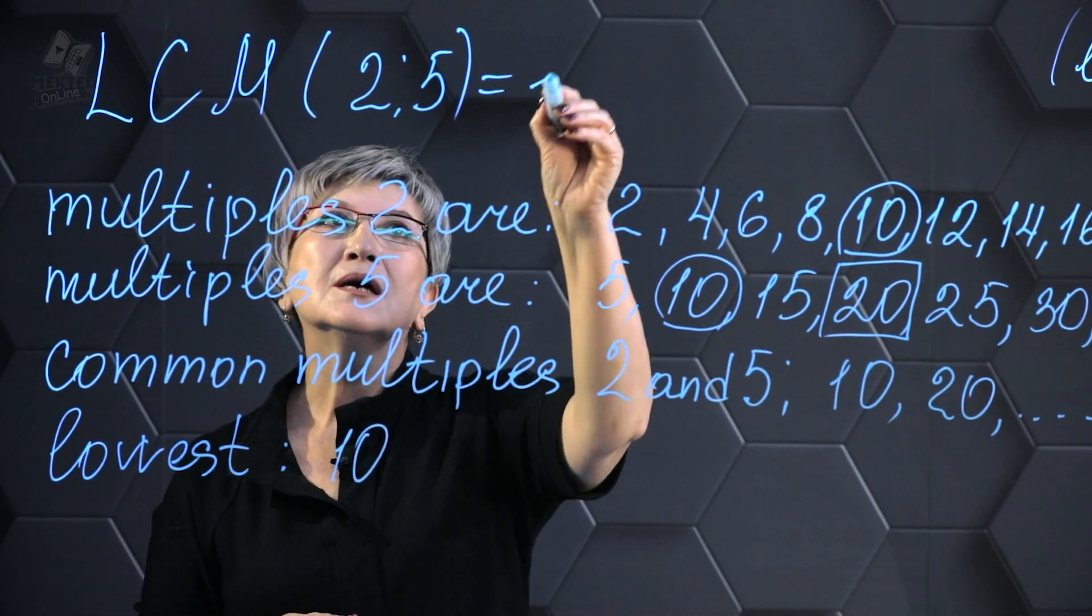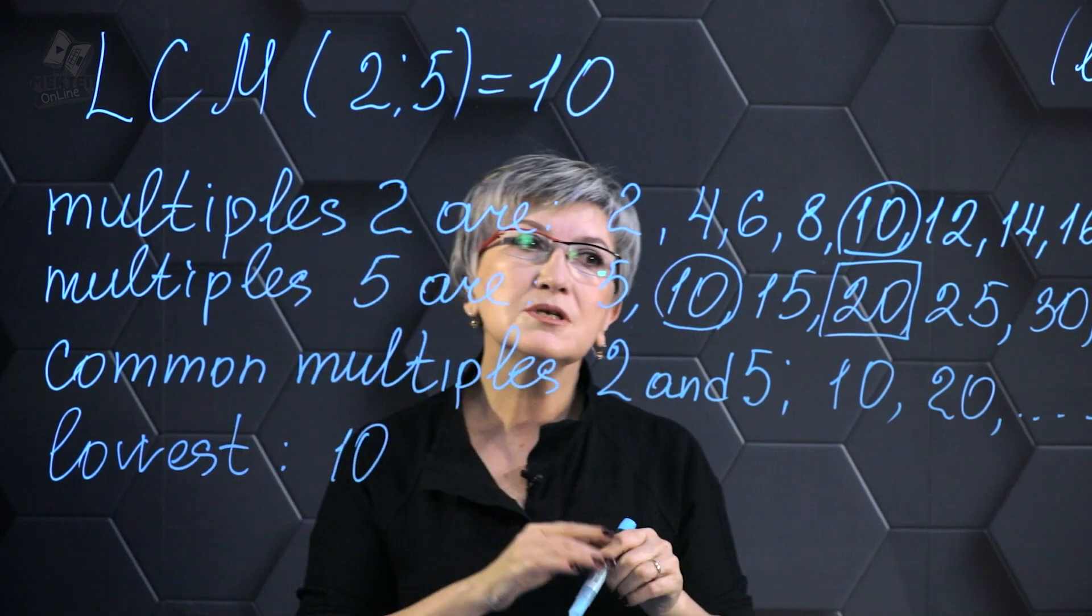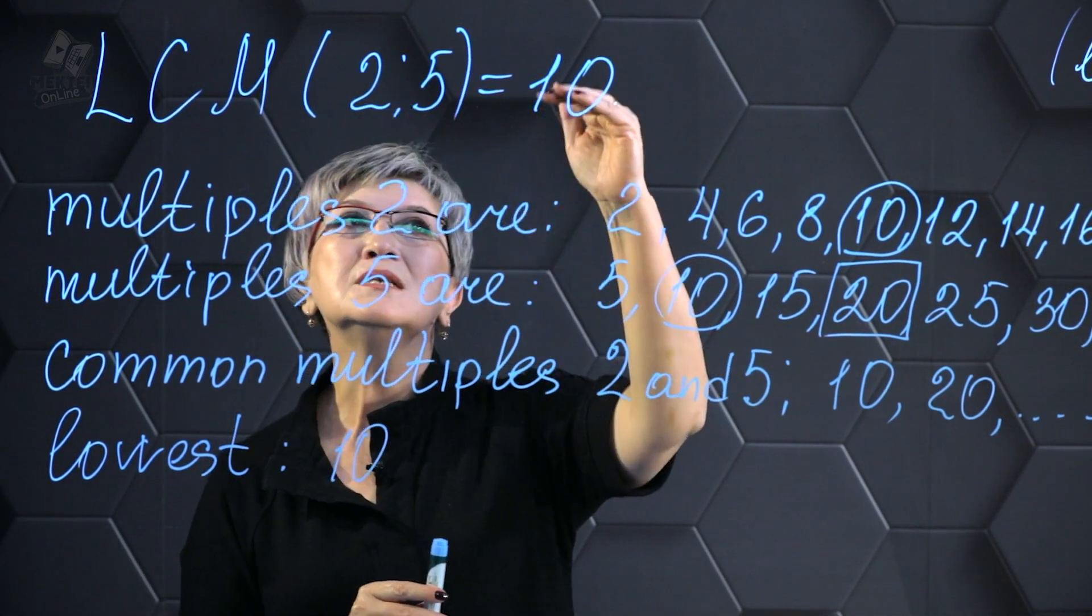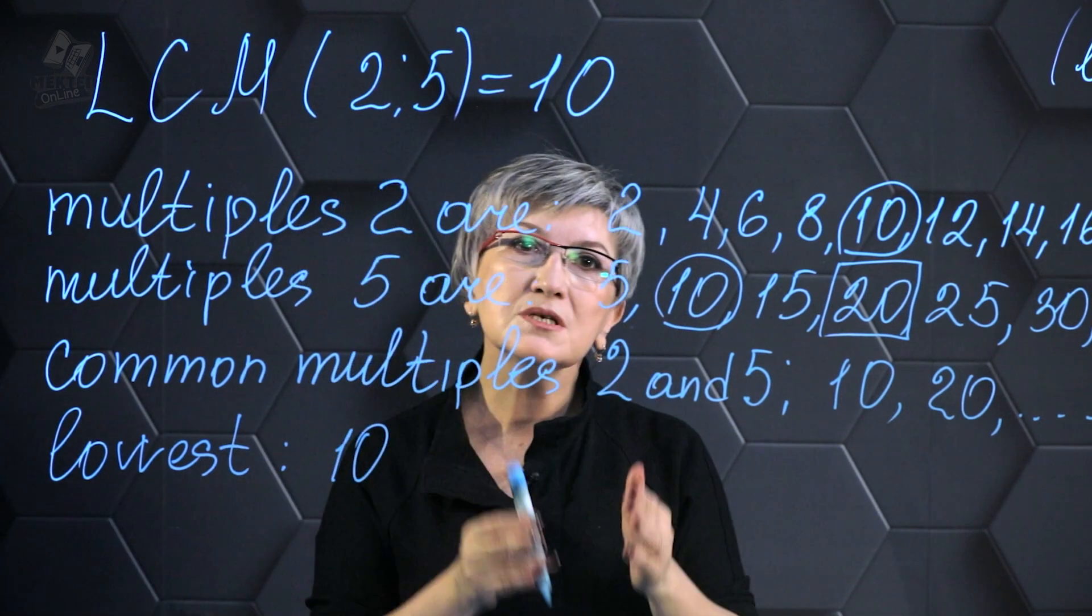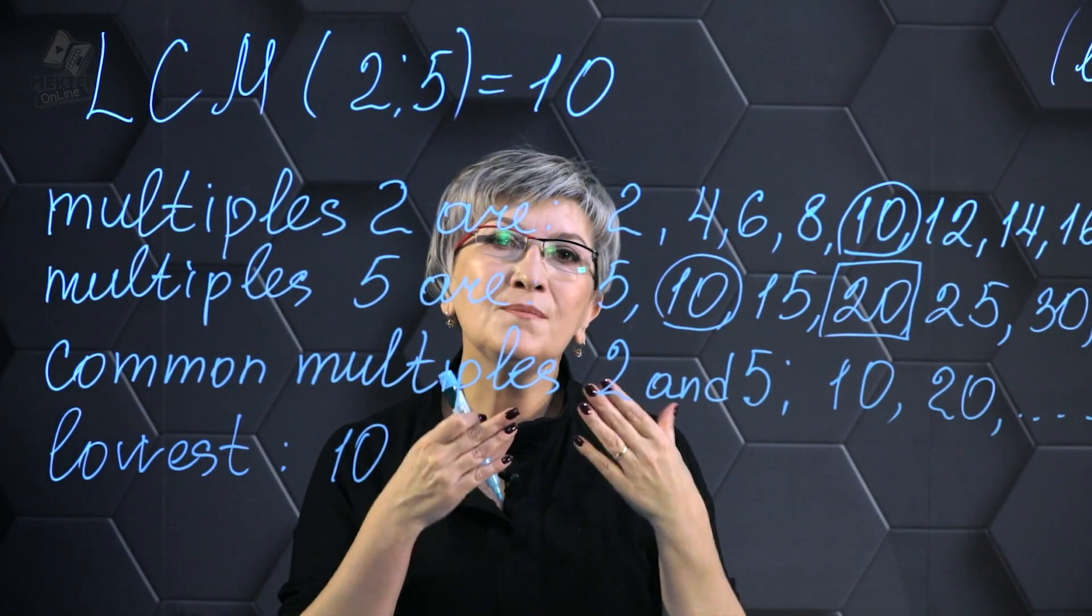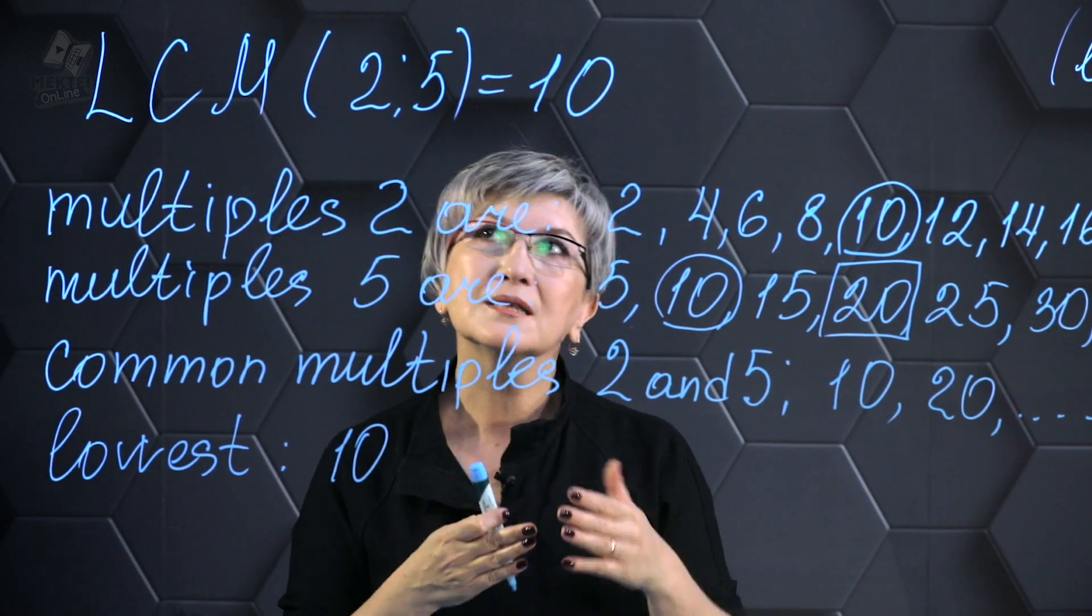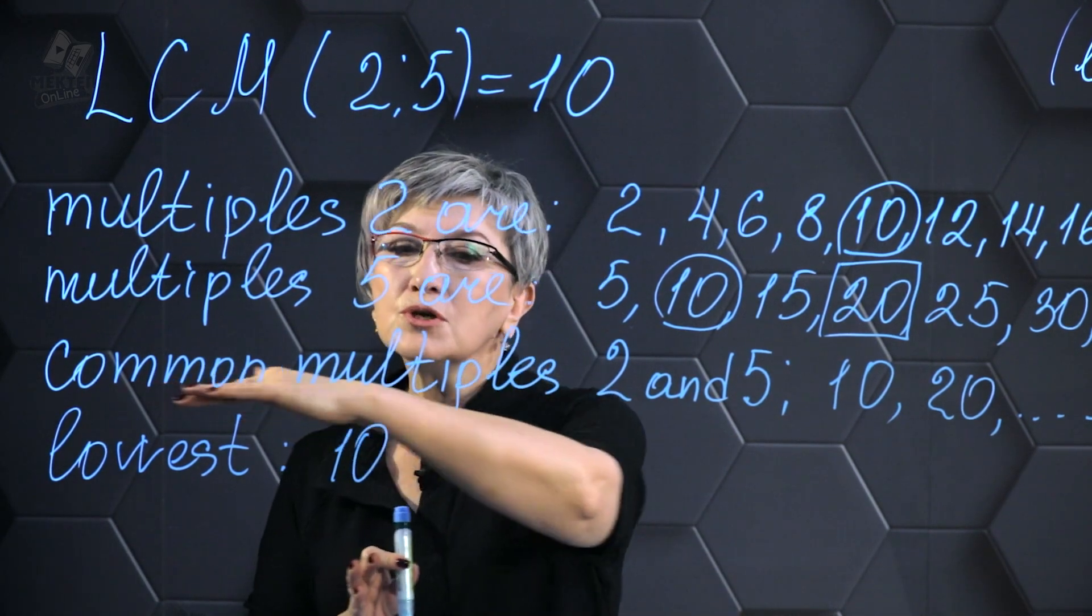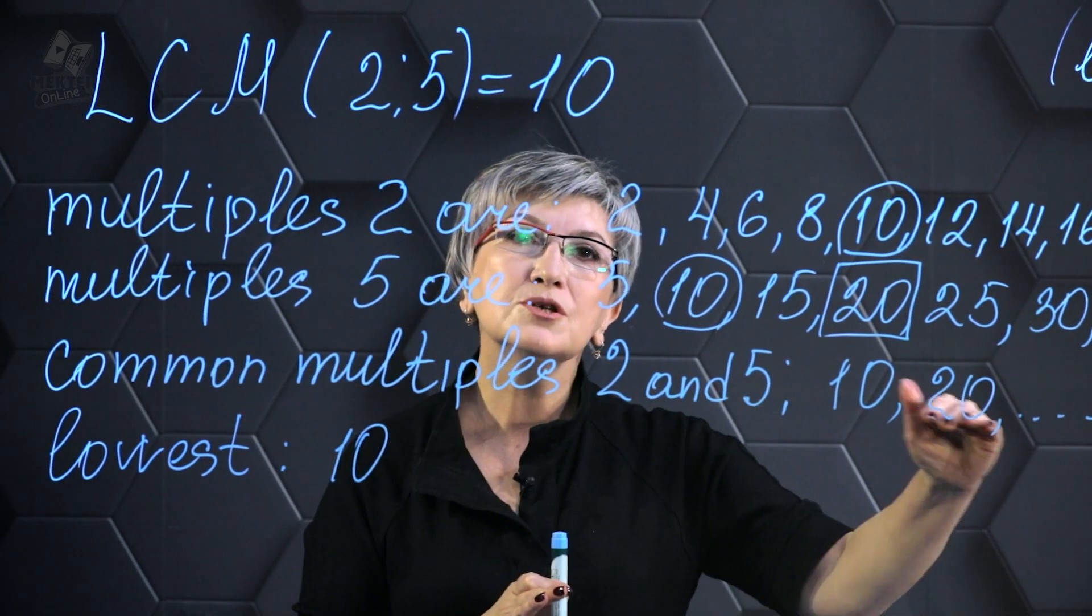So I discovered this number and it is the number 10. Just checking: 10 can be divided evenly by 2 and 10 can be divided evenly by 5. Therefore, 10 will be the smallest common multiple for the numbers 2 and 5.